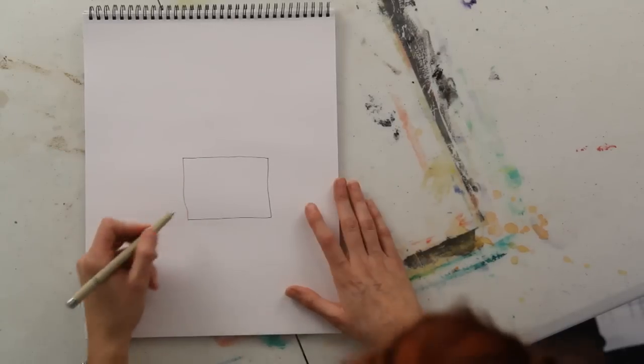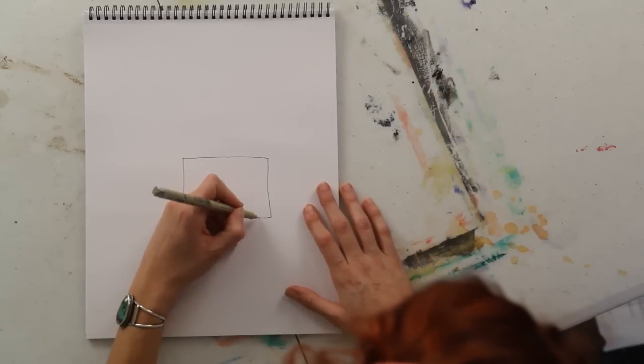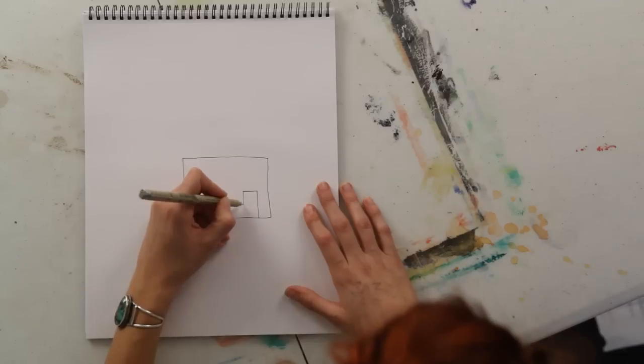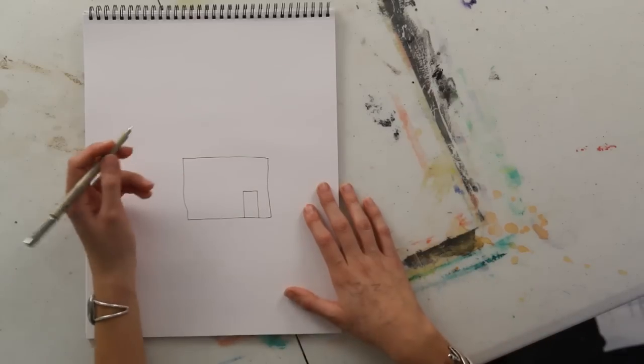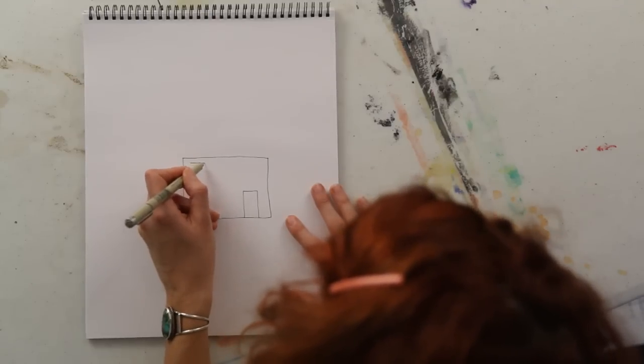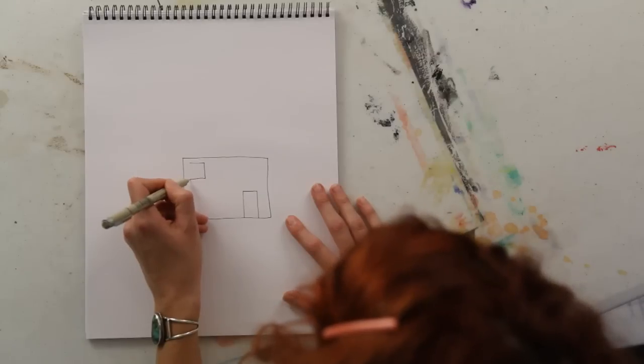And then, within that, you can add another rectangle coming up from the bottom for a door, and then a series of squares for the windows.